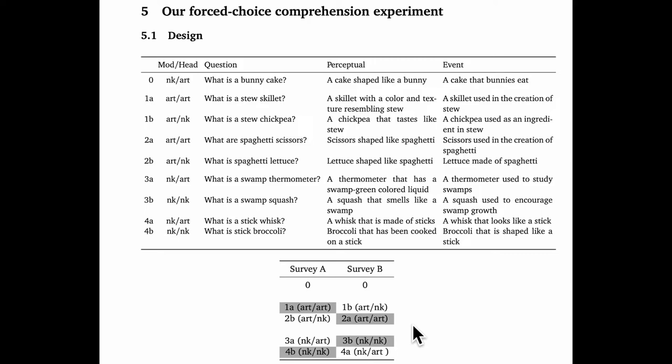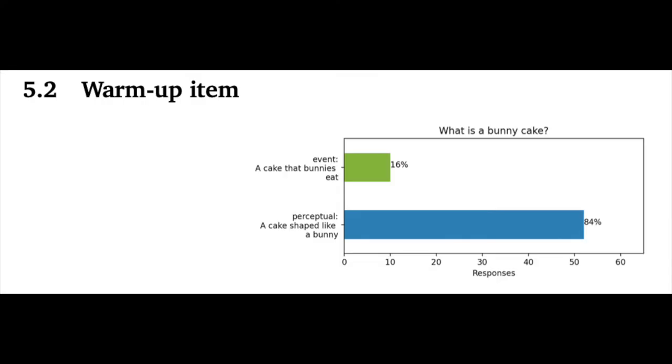So that's the overall design. Let's look at the response distributions and try to get a sense for whether these results are aligned with the core hypotheses from the paper or not, or maybe something in between. For the warm-up item, bunny cake, we have a natural kind artifact pattern. So we expect an event-related reading to dominate, but it's perhaps not surprising that we end up with something more perceptual. This seems to be common with cakes and other foods.